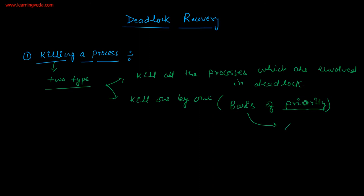The second basis is percent of process completion. Let's say one process is completed 90% and another process is completed 40%. Then try to kill that process which is completed the least. The third basis is number of resources the process is holding.